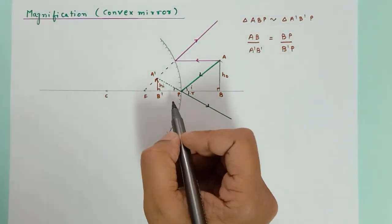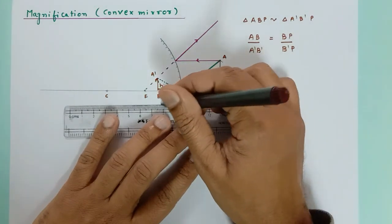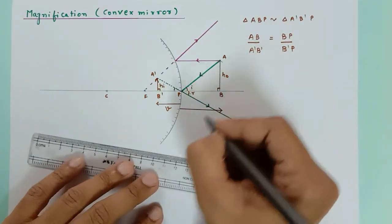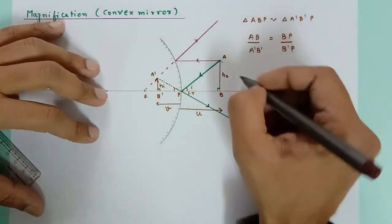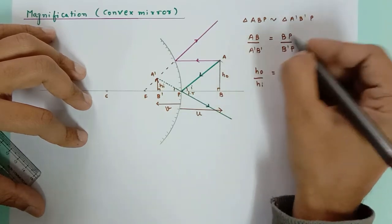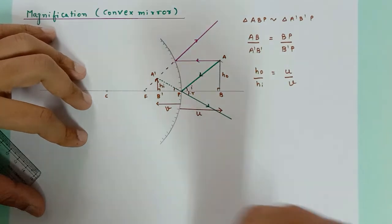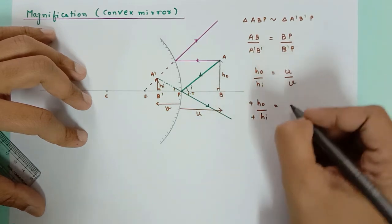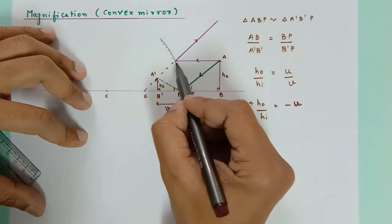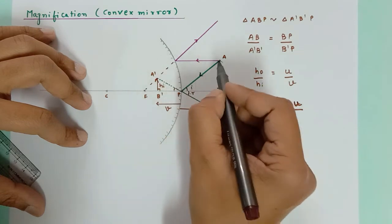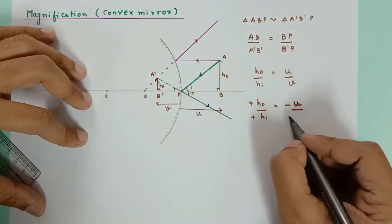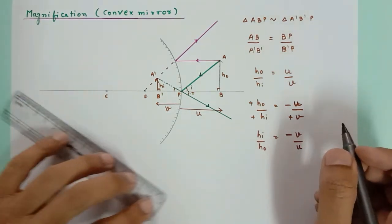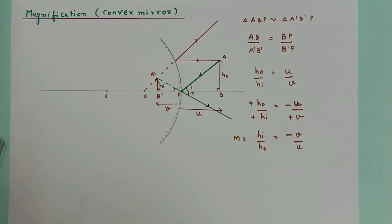The distance from P to B' is v and from P to B is u. So ho upon hi equals BP which is u upon v. Applying sign conventions: ho is positive, hi is positive, v is positive in the direction of the incident ray, and u is minus u because we are measuring against the incident ray. Reversing this: hi upon ho equals minus v by u. So again we get the same magnification formula.